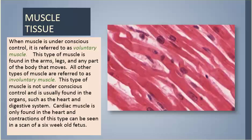When muscle is under conscious control, it is referred to as voluntary muscle. This type of muscle is found in the arms, legs, and any part of the body that moves. All other types of muscle are referred to as involuntary muscle, which is not under conscious control and is usually found in organs such as the heart and digestive system. Cardiac muscle is only found in the heart, and contractions of this type can be seen in a scan of a six-week-old fetus.